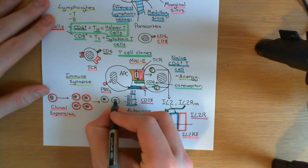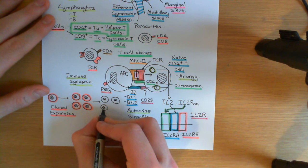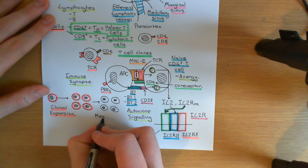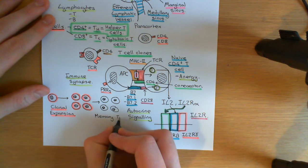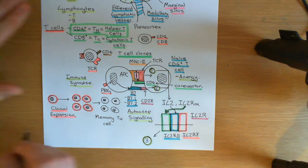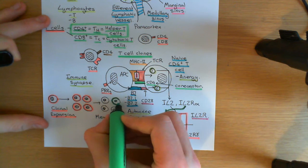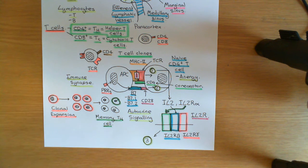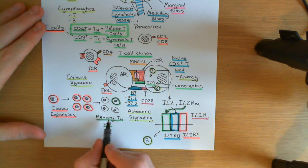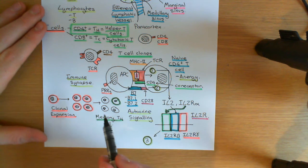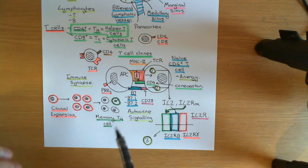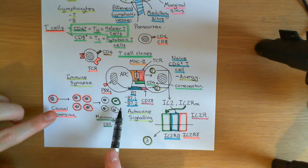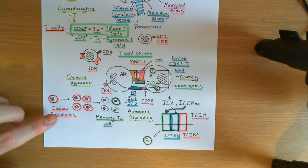Most of these T-cells are going to differentiate into effector helper T-cells, but a few will differentiate into memory helper T-cells. I want to firstly discuss the memory helper T-cells, because that's a much shorter story to tell. Let's say that one has become a memory helper T-cell and the other three have become effector helper T-cells.